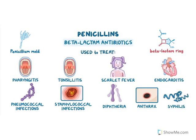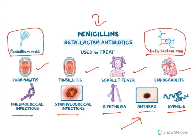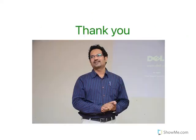Penicillins are obtained from Penicillium mold and have the beta-lactam ring. They are used to treat pharyngitis, tonsillitis, scarlet fever, endocarditis, pneumococcal infections, streptococcal infections, diphtheria, anthrax, and syphilis. So this is about penicillins — their chemical classification and clinical uses. Thank you for watching this video; if you like the video, do subscribe and share.